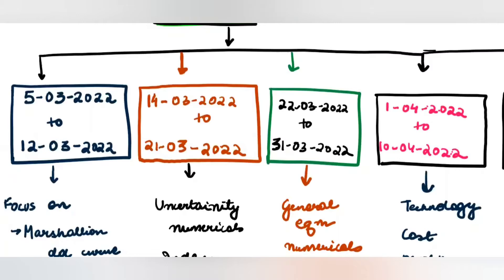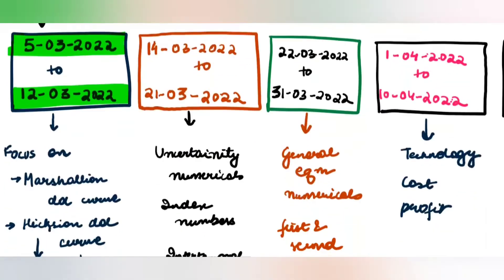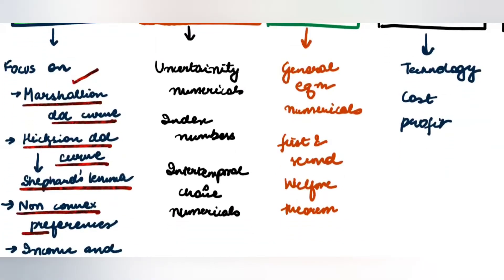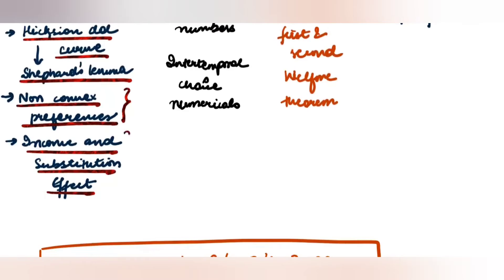The first thing you should be focusing on is consumer theory. From 5th of March to 12th of March, we'll cover all the questions relevant to consumer theory. In particular, I would be doing important and difficult questions like questions on Marshallian demand curve, its properties, Hicksian demand curve, Shephard's Lemma, equilibrium conditions for non-convex preferences, and questions on income and substitution effect for different goods, because that is what can come in the exam.